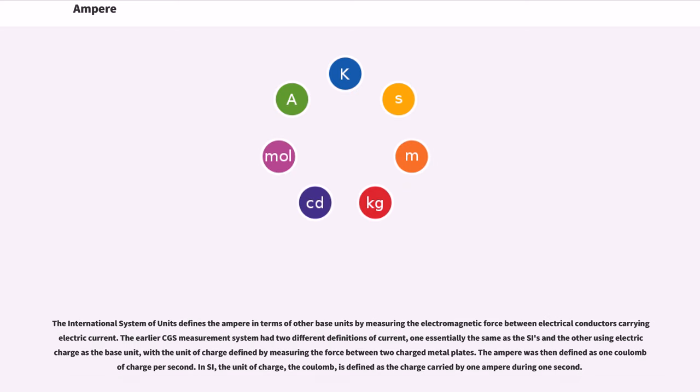The International System of Units defines the ampere in terms of other base units by measuring the electromagnetic force between electrical conductors carrying electric current. The earlier CGS measurement system had two different definitions of current, one essentially the same as the SI's and the other using electric charge as a base unit, with the unit of charge defined by measuring the force between two charged metal plates.